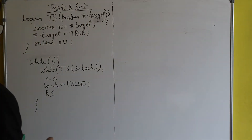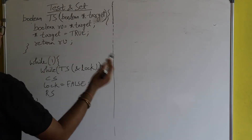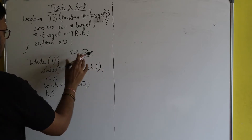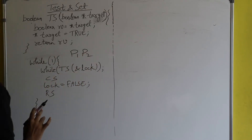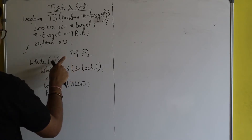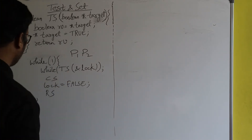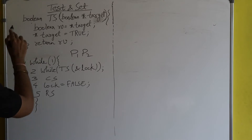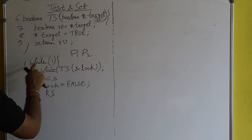It's a simple C code. Suppose there are two processes, P1 and P2, and both want to enter into the critical section. Let's give line numbers: lines one through nine. Suppose process P1 got the chance first.